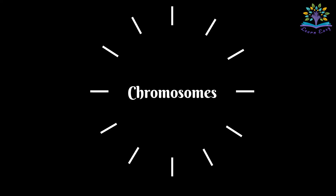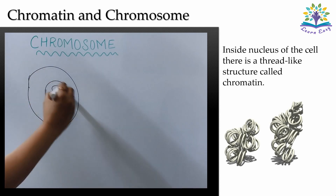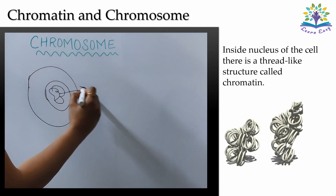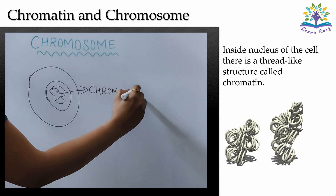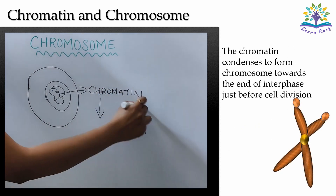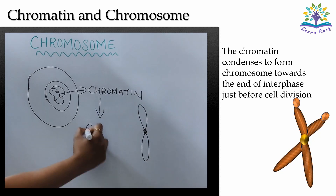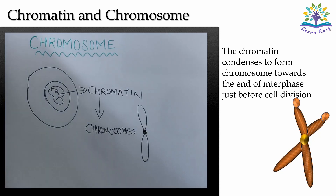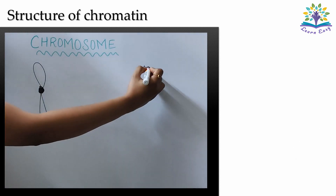Hello students. In this video we will be learning about the structure and types of chromosome. Inside the nucleus of the cell there is a thread-like structure called chromatin. This chromatin condenses to form a chromosome towards the end of interphase, just before cell division. Now let's see what chromatin or chromosome is made of.